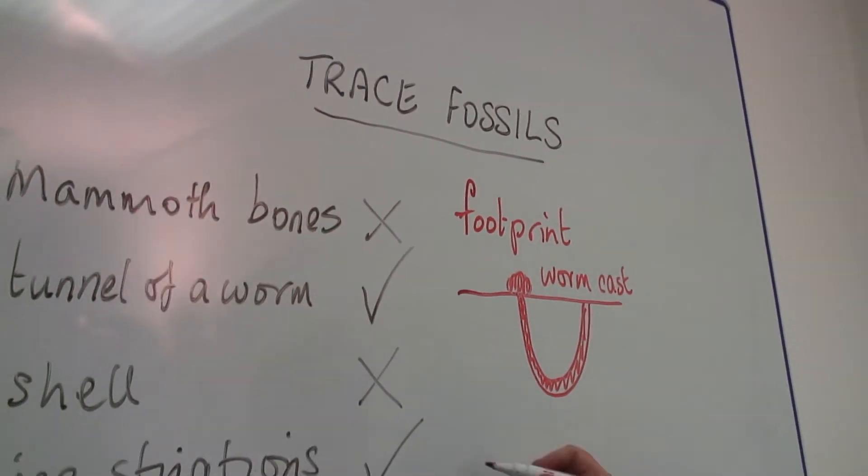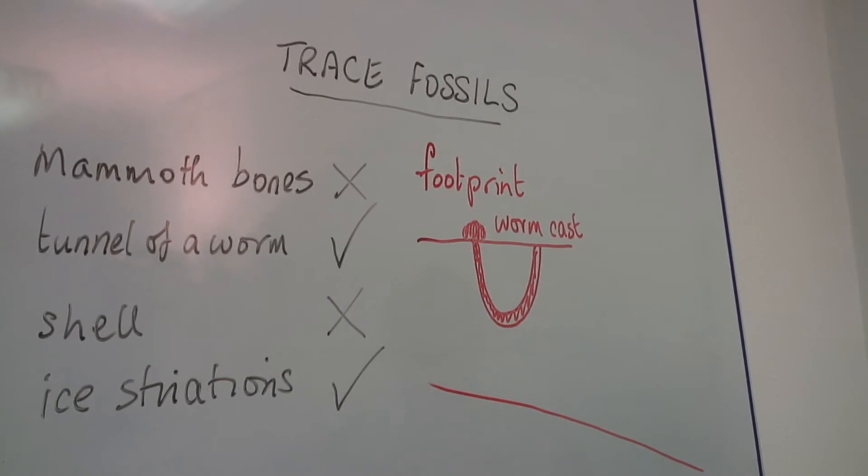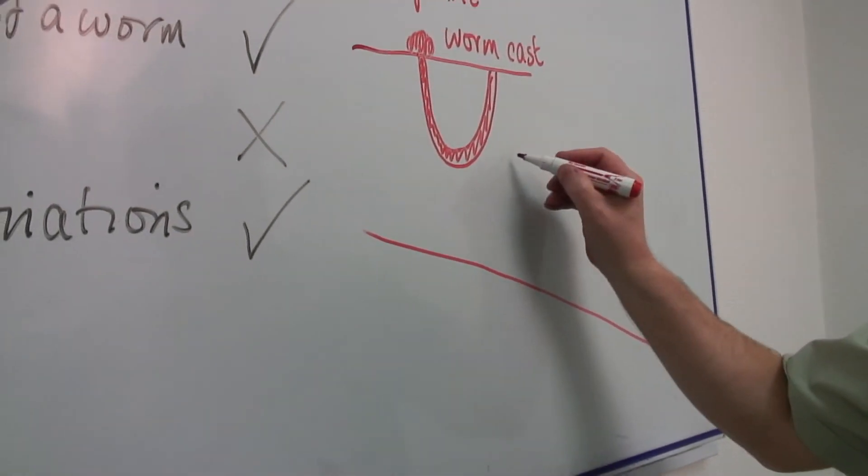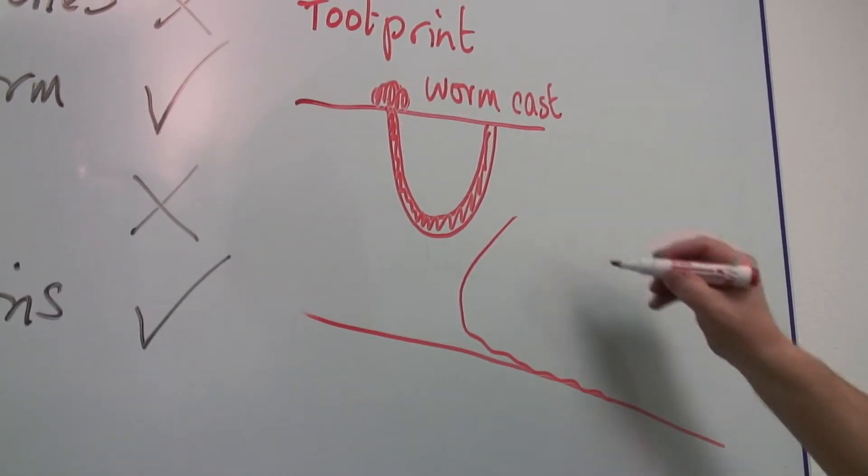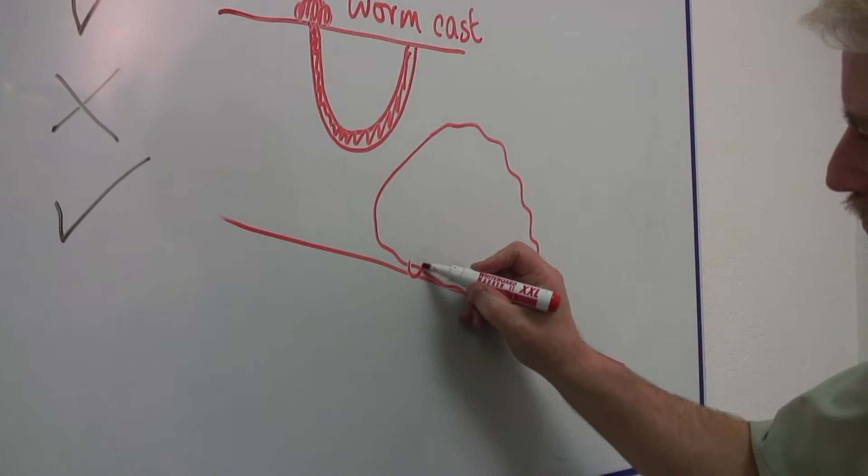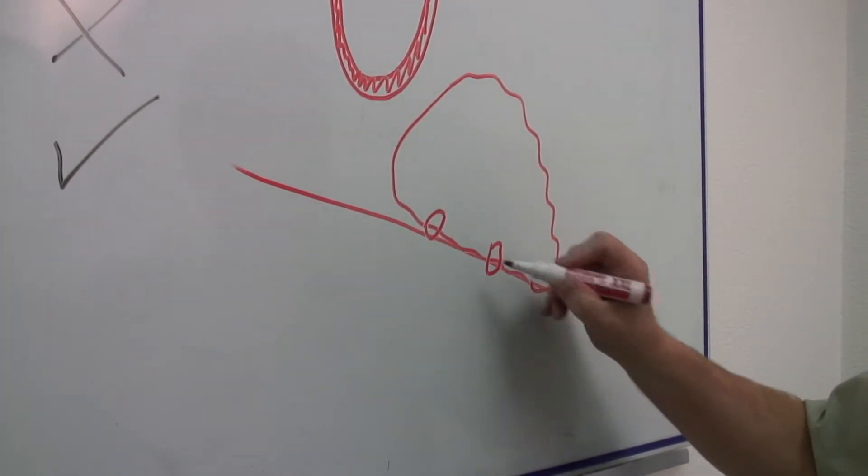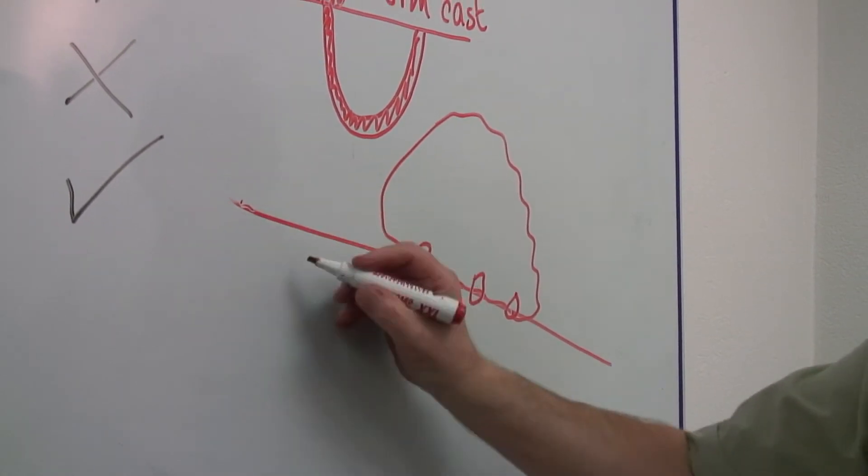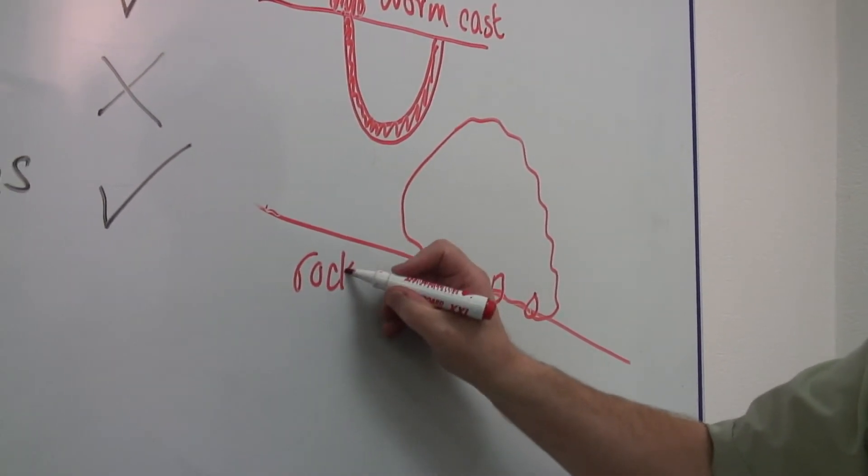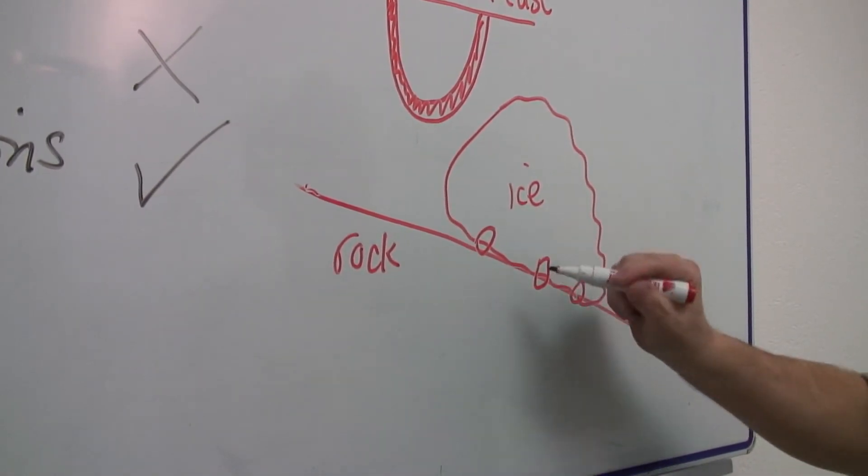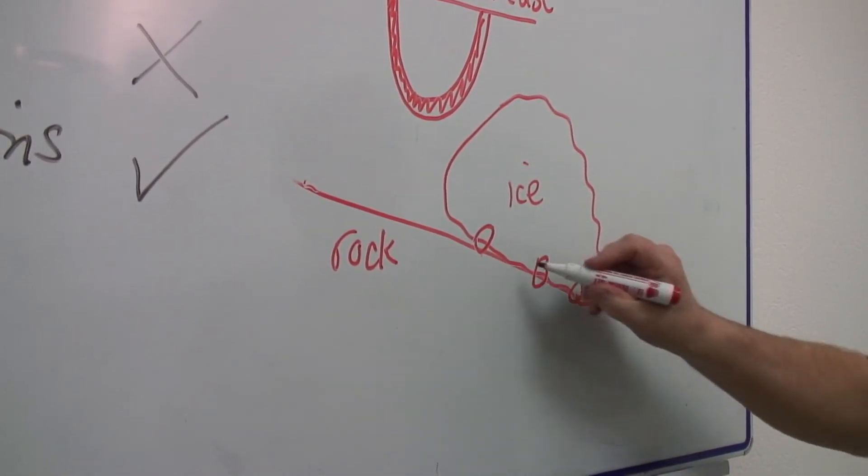Sometimes on a glacier you get ice, and the ice flows down. Let's say you get a huge chunk of ice and in the bottom of it are embedded rocks, like this. What happens if this is rock here? As the ice moves down, these rocks create grooves.